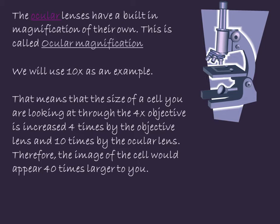This means that the size of the cell you're looking at with the 4x objective is not only increased four times by the 4x objective, but also increased 10 times by the 10x ocular magnification, giving you a total of 40 times magnification. The same applies to all other objectives. So the 10x would be magnified 100 times, and the 40x would be magnified 400 times.